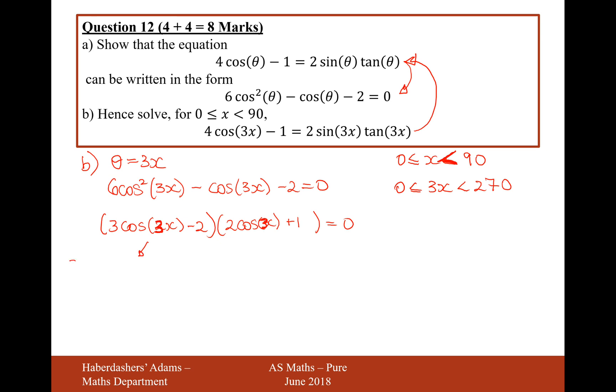So therefore, either this bracket equals 0 now, so 3 cos 3x minus 2 equals 0, in which case cos 3x equals 2 thirds.